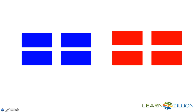In the Lucky Envelope Game, there are four blue envelopes and four red envelopes. One of the blue envelopes contains a $10 bill, as do three of the red envelopes. Each of the remaining envelopes contains a smiley face with the message, 'Have a nice day.'